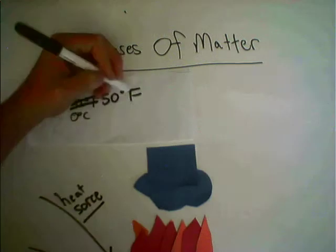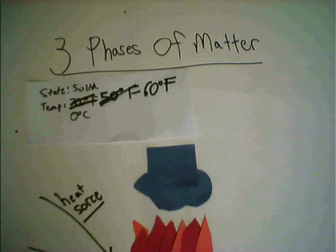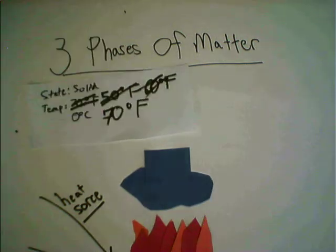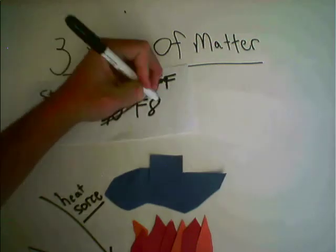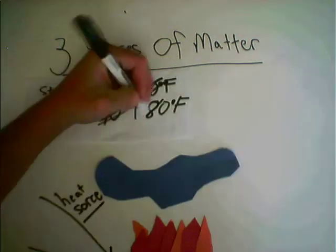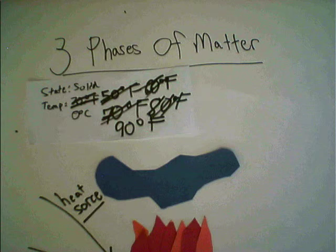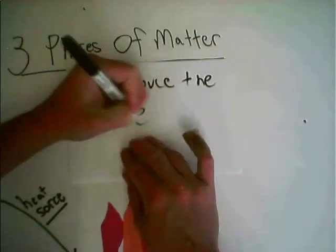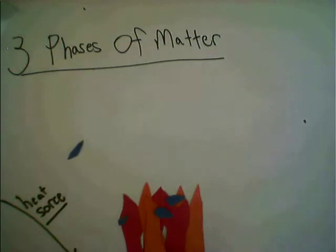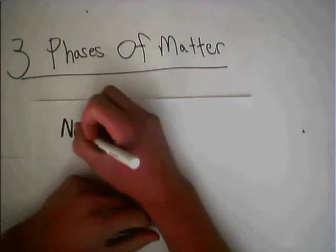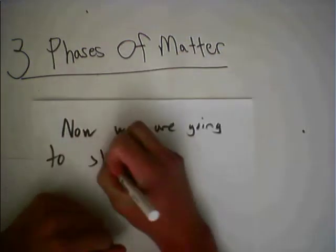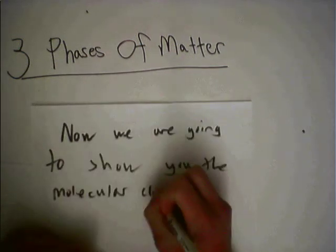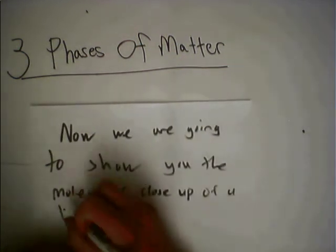You can get addicted to a certain kind of sadness, like resignation to the end, always the end. So when we found that we could not make sense, well you said that we would still be friends. But I'll admit that I was glad it was over.